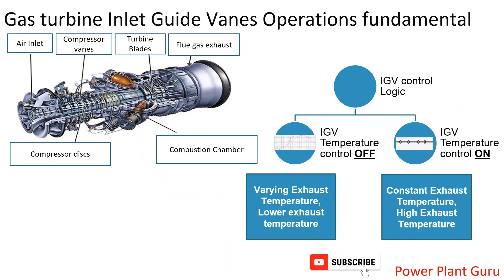In this section we will discuss the majority of operational concepts. For any gas turbine operator or user, IGV control logic is divided into two parts: one is IGV temperature control mode ON, and the other is temperature control mode OFF.